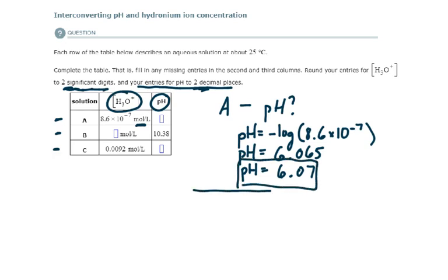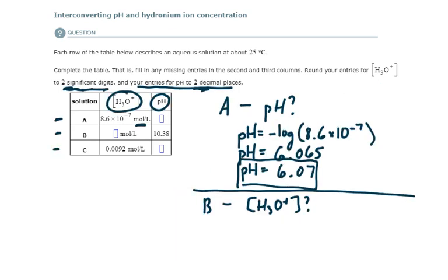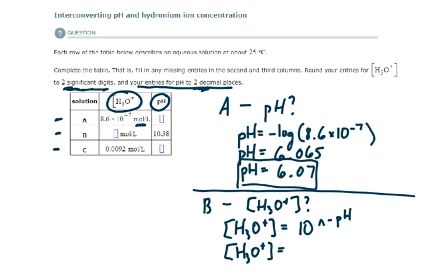For solution B, we are given the pH and need to determine the hydronium ion concentration. The hydronium ion concentration equals 10 to the negative pH. With a pH of 10.38, that gives us a hydronium ion concentration of 4.2 × 10⁻¹¹ moles per liter.